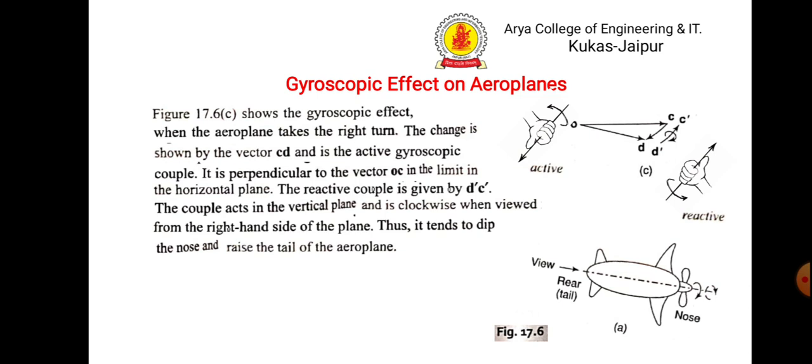So, in this, the thumb will indicate D dash to C dash and the couple will be clockwise. It means that the rear side will be upward and the front side will be downward. So, the effect is the tail will be up and the nose will be dip.